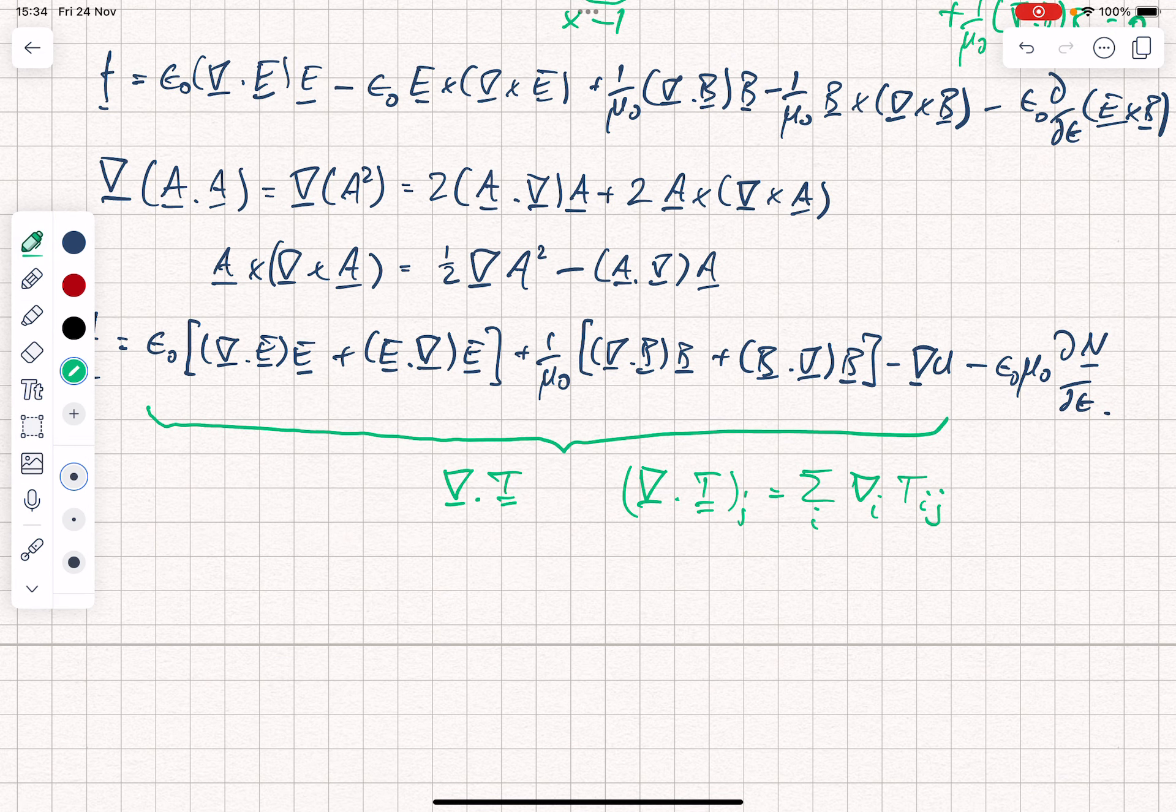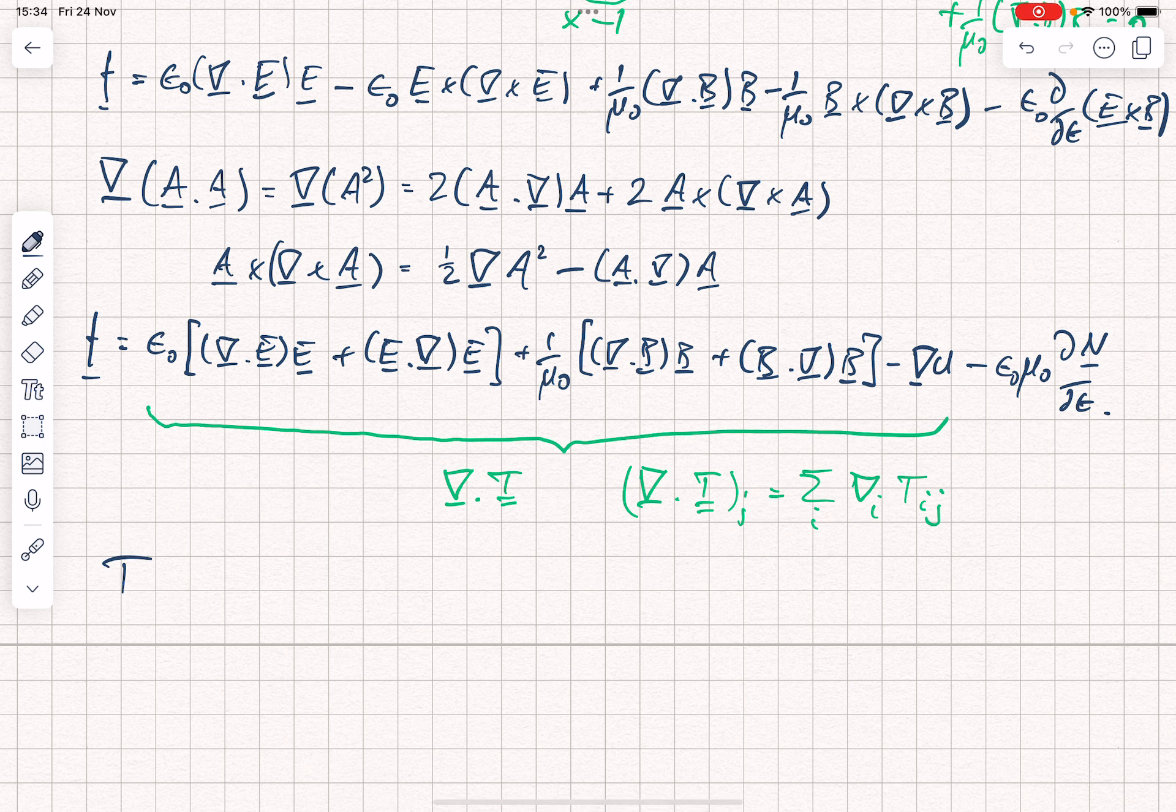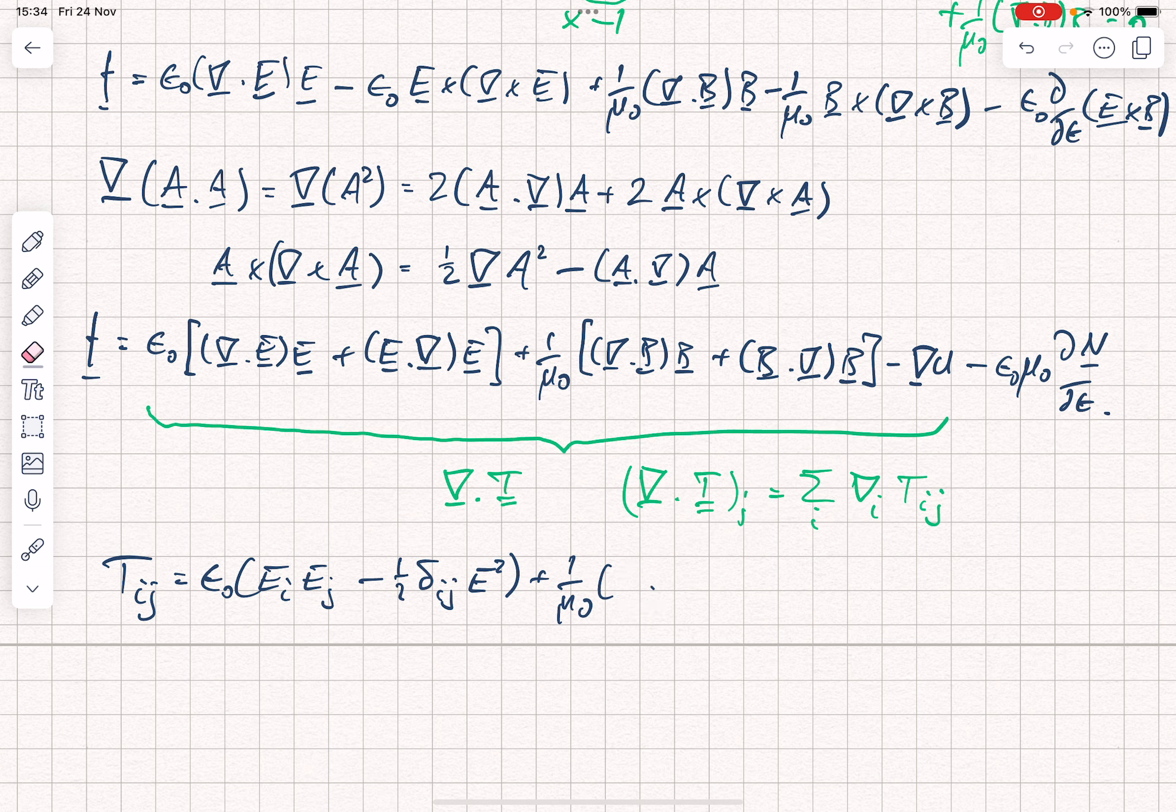So, remember we've already defined in a previous video, but I'll give it here, tij is equal to epsilon 0 into EI, EJ minus a half delta ij E squared. And you could hopefully see that when you take the gradient of that, you're going to get the kind of terms that we've already been seeing.